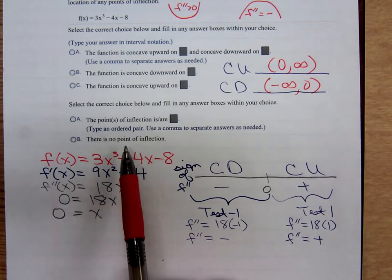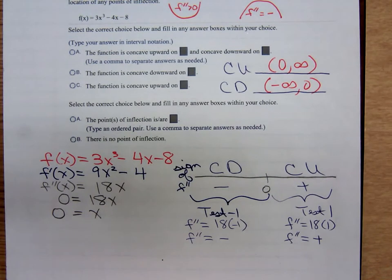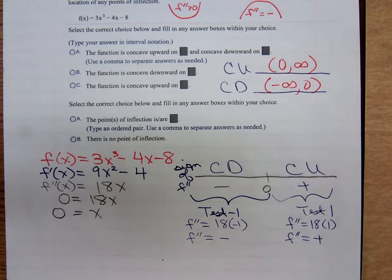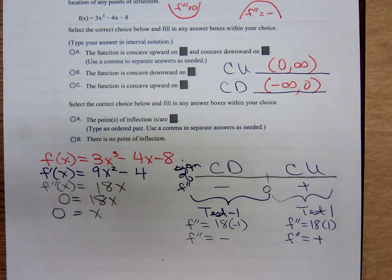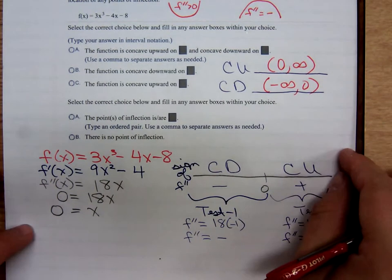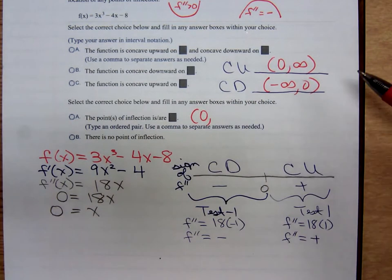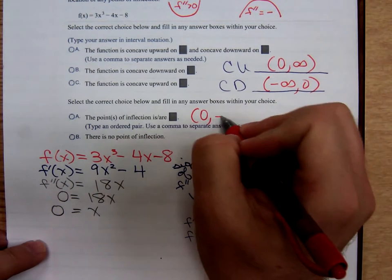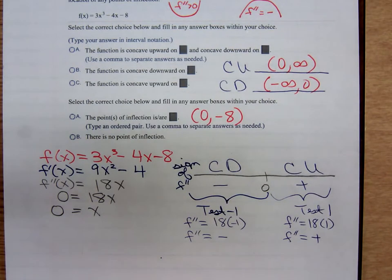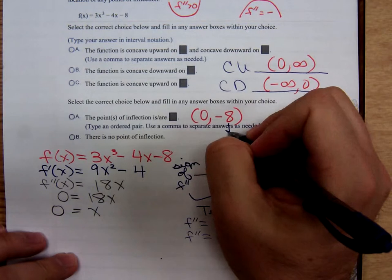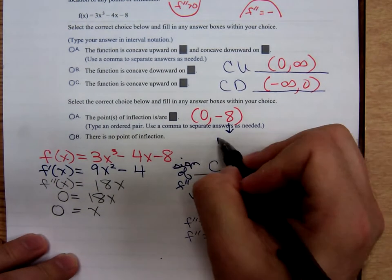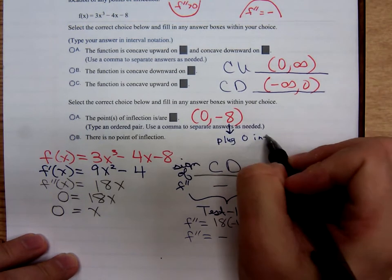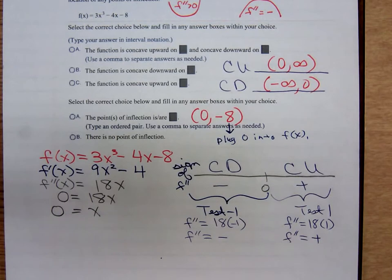We're also asked to determine the location of any points of inflection. Remember, points of inflection are ordered pairs at which the graph changes concavity. A graph can change concavity on either side of a vertical asymptote or at a cusp. But here, we have an ordered pair plug in 0 into our function when x is 0. When x is 0, you plug it into the original function to get the y coordinate. We have an ordered pair of (0, -8). And make a note, to get that -8, to create those ordered pairs, you are plugging into the original function. You plugged 0 into f(x), the original function, to determine the ordered pair.